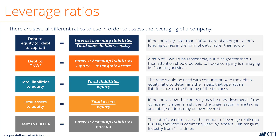EBITDA is often used as a proxy for cash flow, even though it may be very far from a true cash flow metric since it does not include capital expenditures or any changes in working capital. But it is used quite frequently in the industry, and lenders often refer to the amount of leverage or gearing that a company can handle as a multiple of EBITDA.